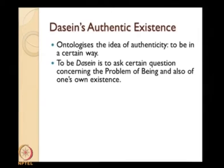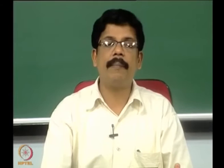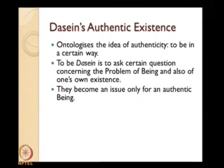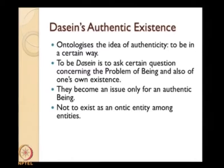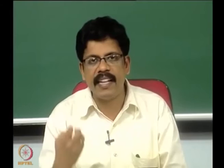To be Dasein is to ask questions concerning the problem of being and one's own existence — this becomes an issue only for authentic being, not to exist as an ontic entity among other entities. One of the essential features of authentic Dasein is to seek, to ask, to search, to become — to be in the process of exploring rather than just conforming to what is happening around you. Rather than being a blind conformist, you try to explore your own possibilities and act accordingly.